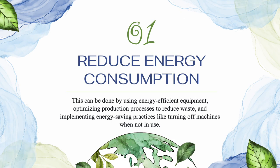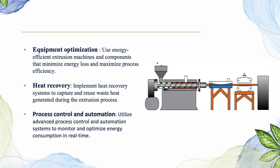Reduce energy consumption. This can be done by using energy-efficient equipment, optimizing the production process to reduce waste, and implementing energy-saving practices like turning off machines when not in use. To reduce energy consumption, we can use equipment optimization, which uses energy-efficient extrusion machines and components that minimize energy loss and maximize process efficiency.